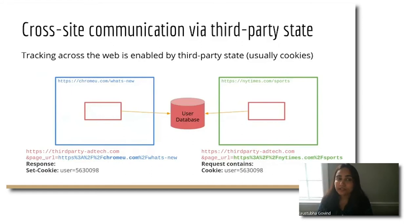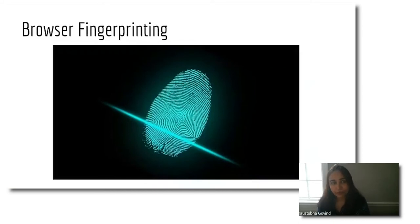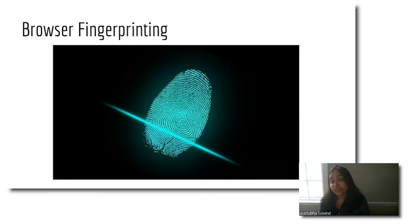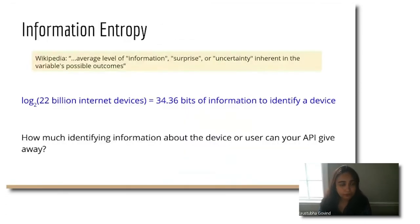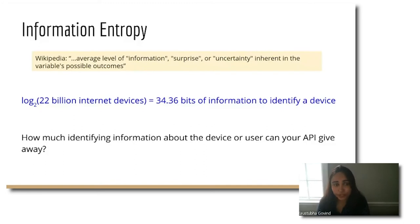However, cookies could be cleared — the user has control over forcing third parties to forget who they are. A much more problematic way of tracking uses browser fingerprinting. Sites can inspect or query information that could be used to extract a fairly unique fingerprint to identify users. This technique removes reliance on third-party state and unfortunately is persistent across clearing of state or browser history. Fingerprinting relies on headers and APIs that each reveal small amounts of identifying information about the device — such as hardware characteristics, media devices connected, or user preferences — and when this information is combined, it can form a relatively stable identifying fingerprint.